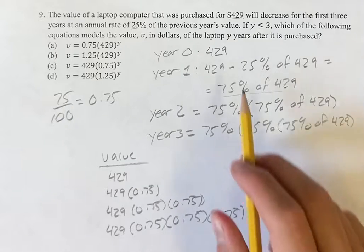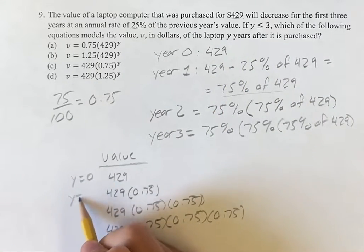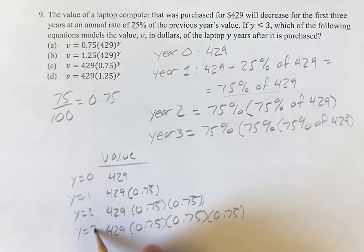And if we're taking this y years after it's purchased, y equals 0, y equals 1, y equals 2, y equals 3.